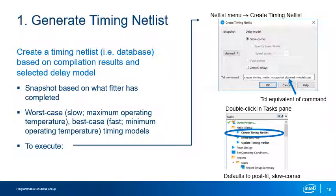Executing this command through the task pane uses the default options of a Post-Fit Netlist and a Slow Corner Delay Model. If there is no Post-Fit Netlist because the design has not yet been fully compiled, executing the command this way will fail. If this happens, use the command from the Netlist menu to select the Post-Map option.